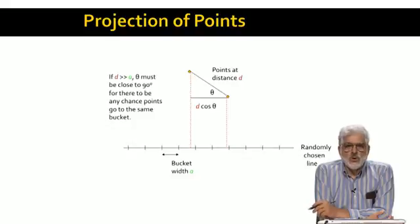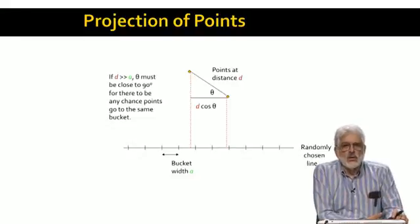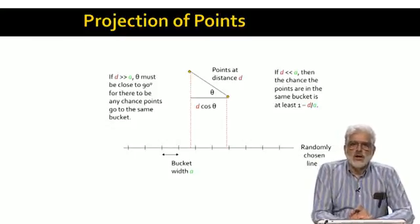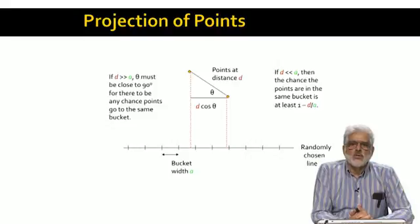Notice that if d cosine theta is bigger than a, there is no chance that the two points fall in the same bucket. If d is very much greater than a, theta must be almost 90 degrees for the points to land in the same bucket. On the other hand, if d is much smaller than a, there is a good chance that the two points land in the same bucket. Since d cosine theta is surely no bigger than d, the probability that no bucket boundary separates the projections of the two points is at least 1 minus d over a.